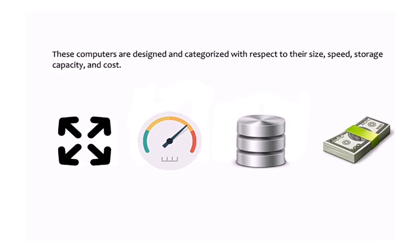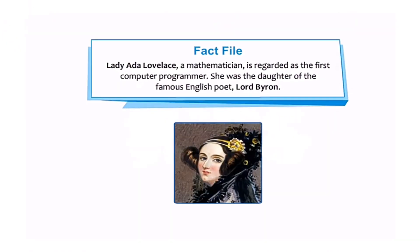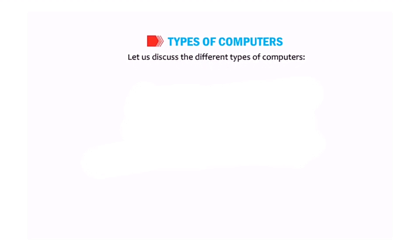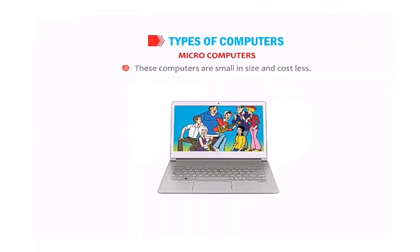Here's an important fact: Ada Lovelace, a mathematician, is regarded as the first computer programmer, and she was a daughter of the famous English poet Lord Byron. Now let's discuss the different types of computers, starting with microcomputers.